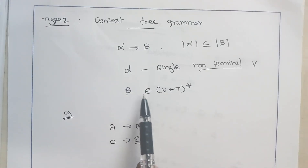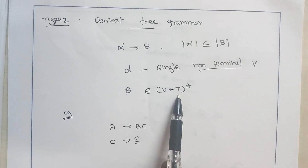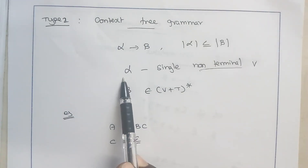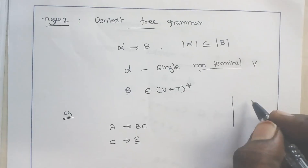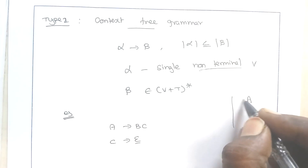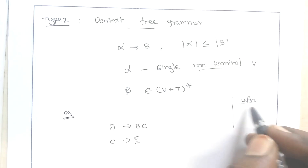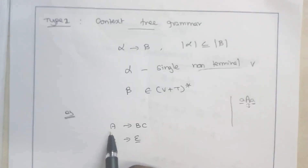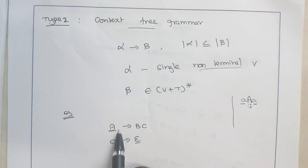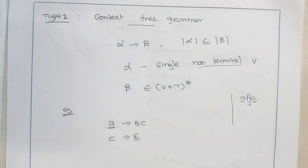In the beta case, it might be either an empty string, a single variable, a single terminal, or a combination of variable and terminal. Whereas alpha is always a single non-terminal. The reason we call it a context free grammar is that when you have a variable with some surrounding combination, we call that a context. In a context free grammar, alpha is always a single variable with nothing in front or behind it — it is free of context. The mathematical model that accepts this context free grammar is called a push-down automata, and push-down automata uses a stack as an external memory unit.